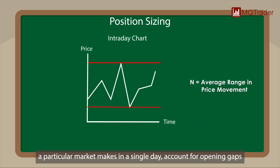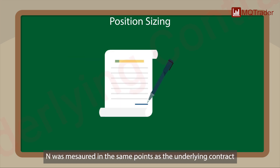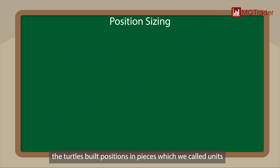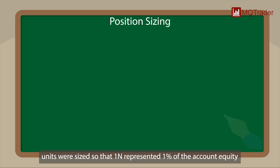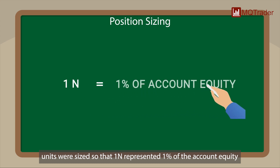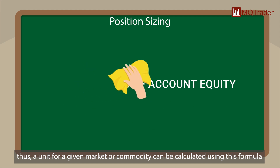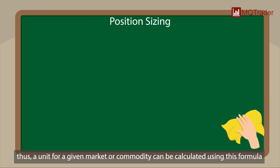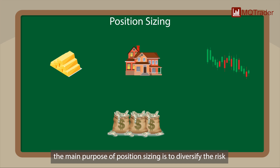N was measured in the same points as the underlying contract, accounting for opening gaps. The turtles built positions in pieces called units. Units were sized so that one N represented one percent of account equity. A unit for a given market can be calculated using this formula. The main purpose of position sizing is to diversify the risk.